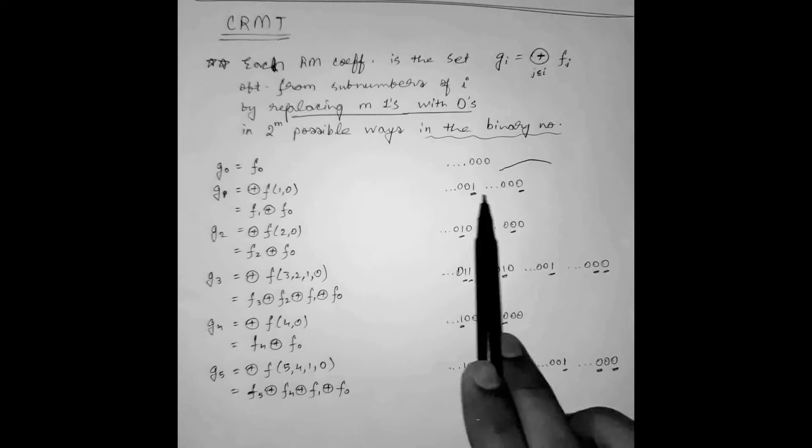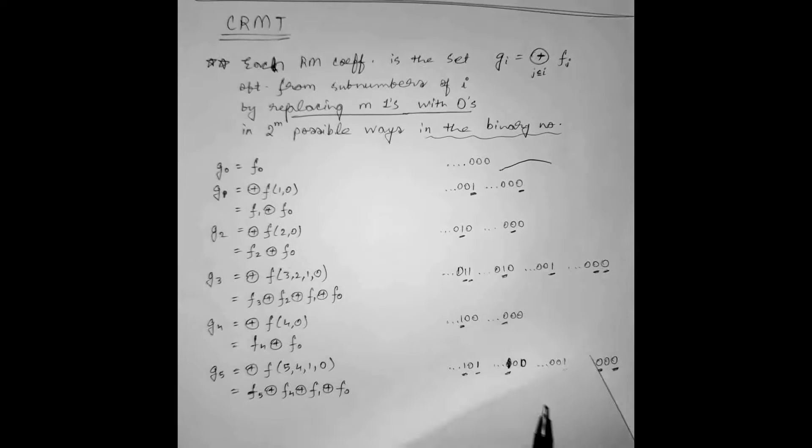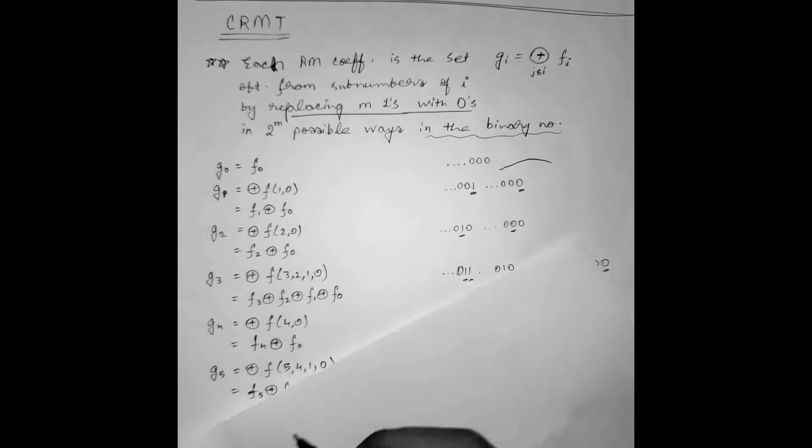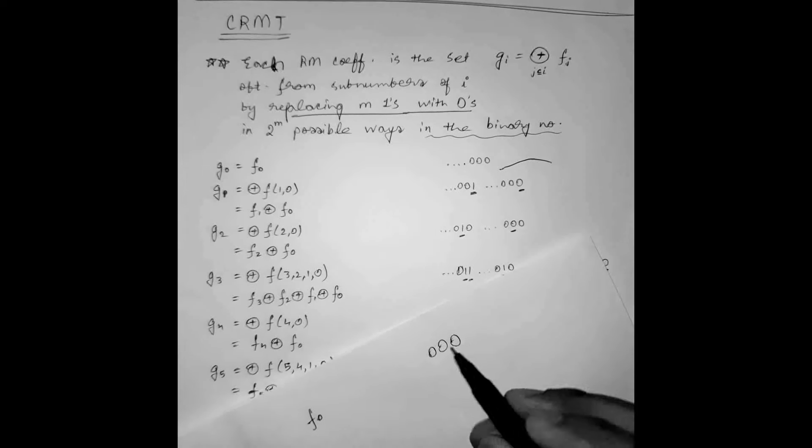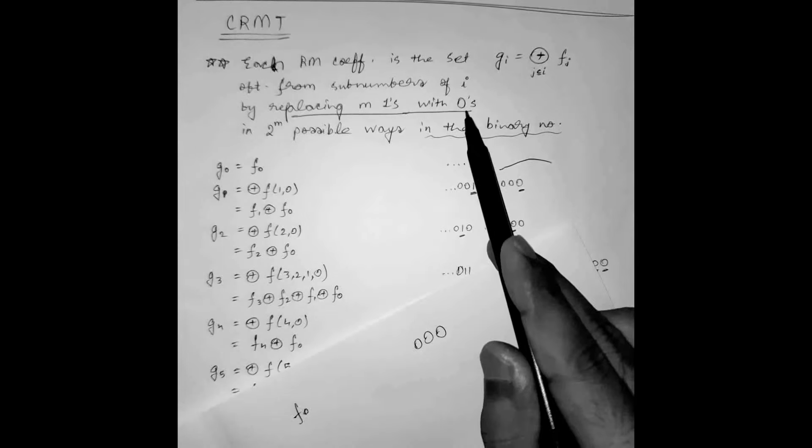What I have written on the right side, I will try to explain it by writing it again for you. So F0, for three variables we can write it as 0, 0, 0, all terms are zero. So we don't have to replace ones with zeros here.